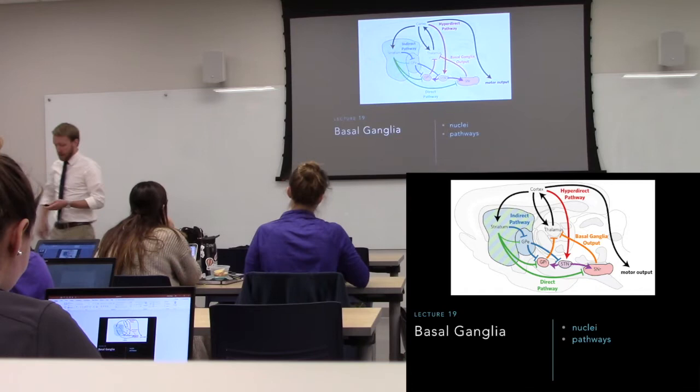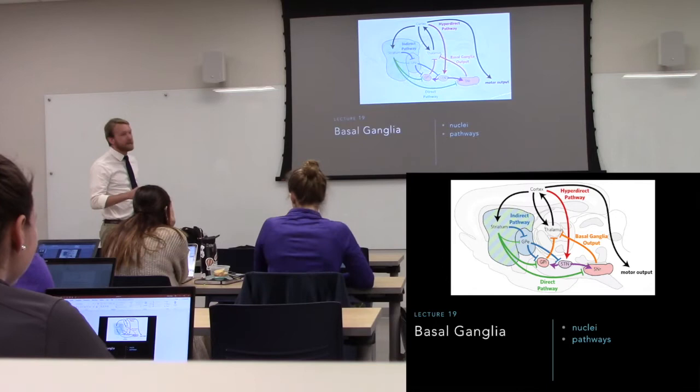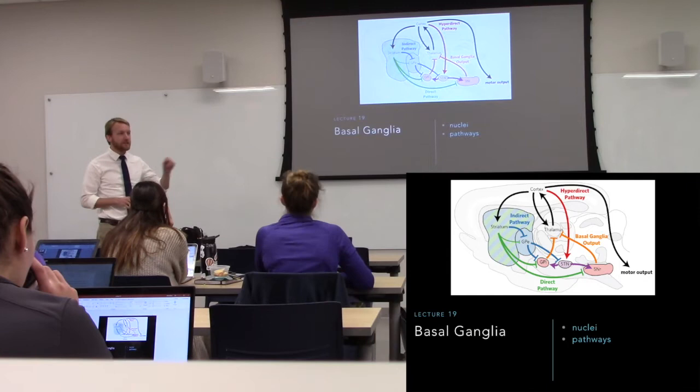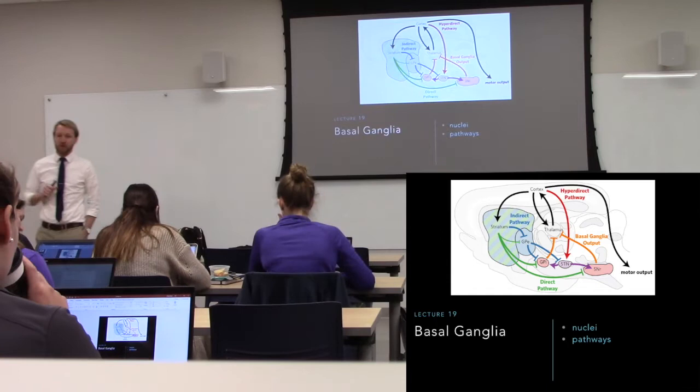We're going to start off with the basal ganglia. What that is going to allow us to do is select appropriate actions and filter out the noise.